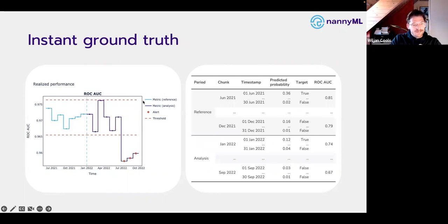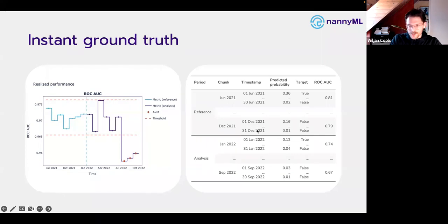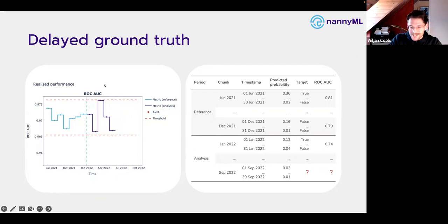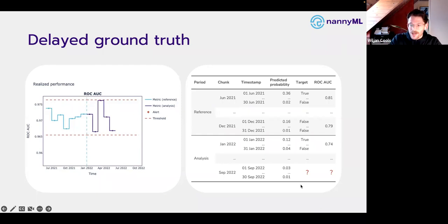In most cases it's not that straightforward — we can measure realized performance only when we have targets in production. But in the majority of use cases the ground truth is delayed. For example, with churn prediction, if your prediction window is three to five months, it takes time to find out whether customers actually churned. And with loan defaults, you have to wait until the end of the term. When you're making new predictions and look back at the past, there is no visibility on performance because you're still waiting for the ground truth to be realized.